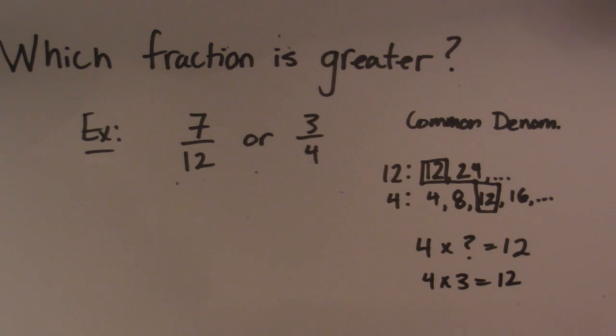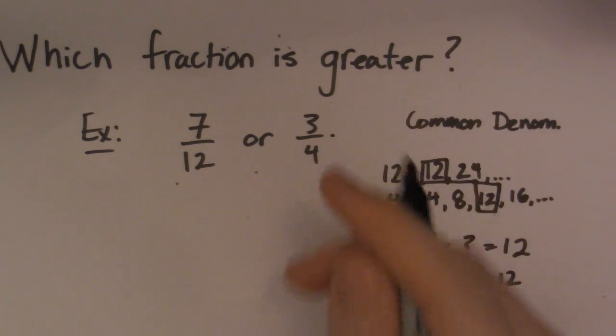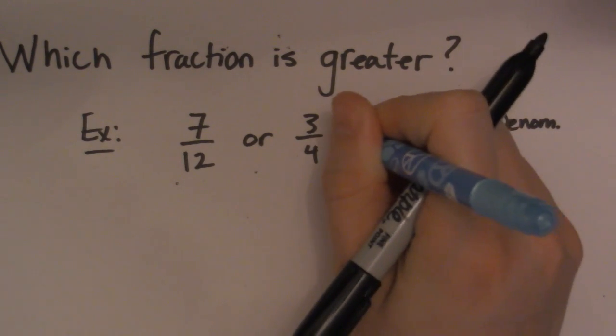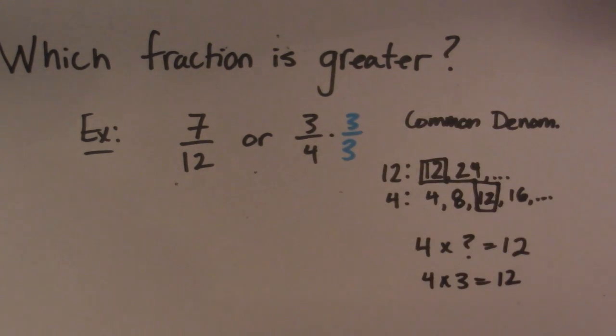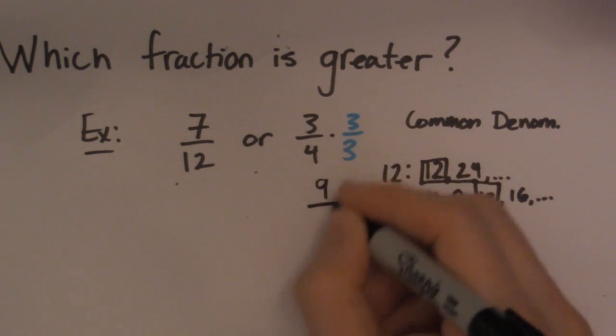So that means that 4 times 3 gives me 12. Now of course, you probably just knew that anyway. But that's a systematic way of doing it if you have numbers that are kind of tough. So now what you want to do is you want to take this 3 and times both of these guys by 3. So the top number and the bottom number by 3. So if I do that, I can rewrite this guy so 3 times 3 is 9 and then 4 times 3 is 12.